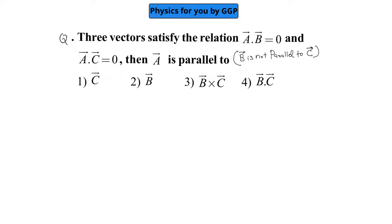So we know that a dot b is equal to 0, that means a and b should be perpendicular, and a dot c is equal to 0, that means a and c should also be perpendicular.